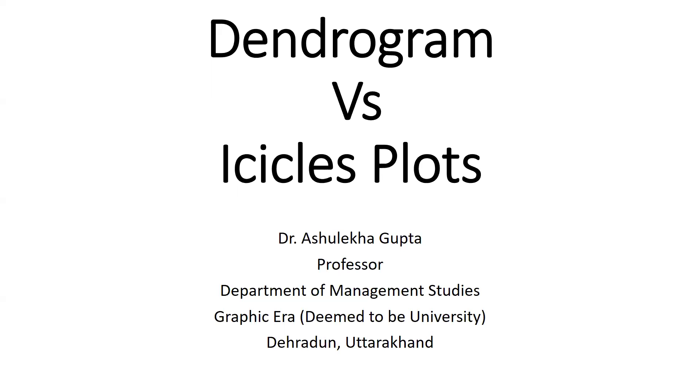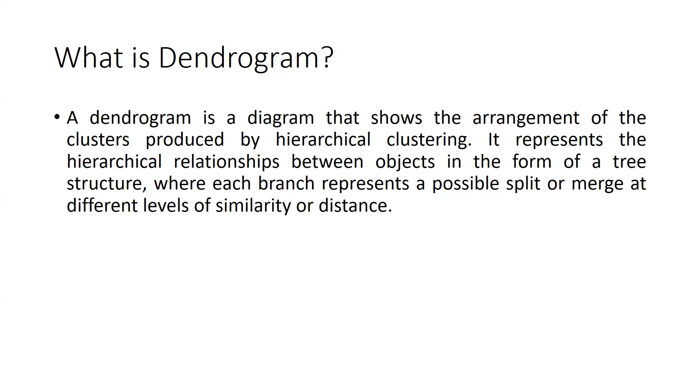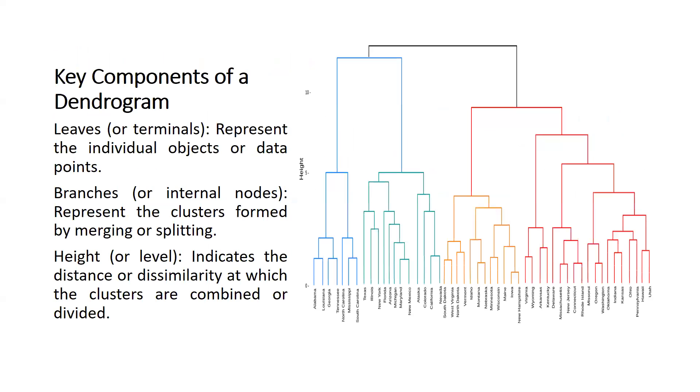Dendrogram is basically a diagram that shows the arrangement of the clusters produced by hierarchical clustering. It represents the hierarchical relationship between objects in the form of a tree structure, where each branch represents a possible split or merge at different levels of similarity or distance.